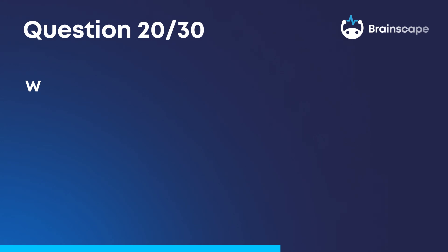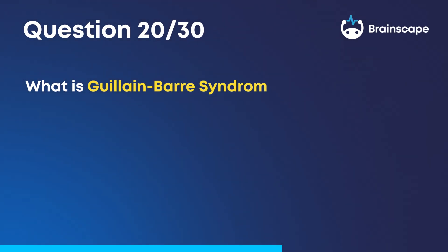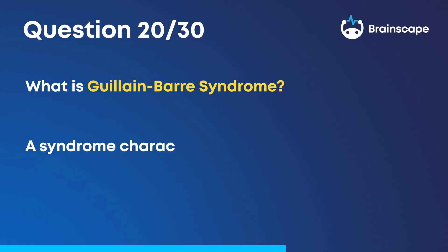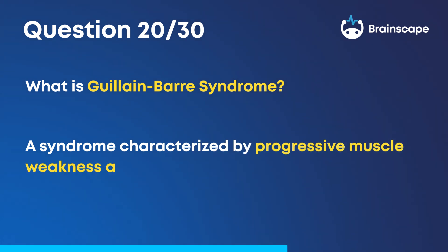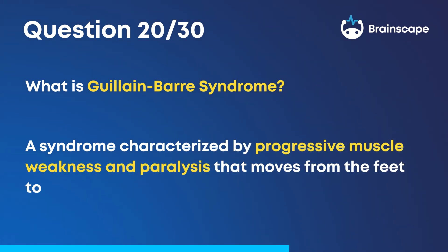Question 20. What is Guillain-Barré syndrome? A syndrome characterized by progressive muscle weakness and paralysis that moves from the feet to the head.